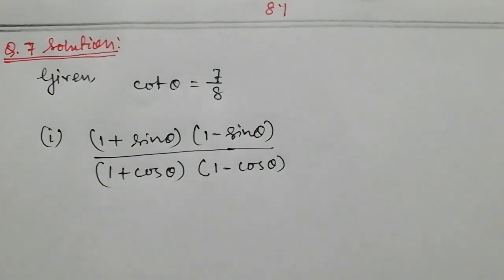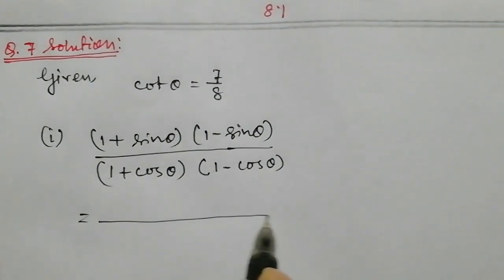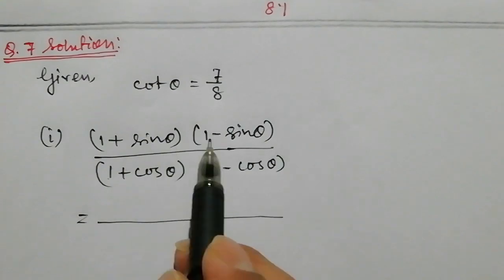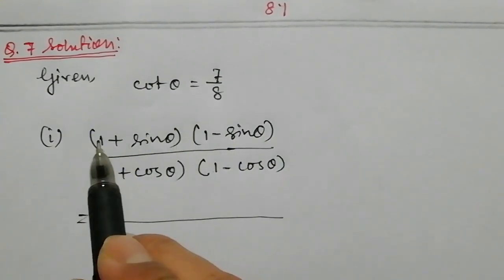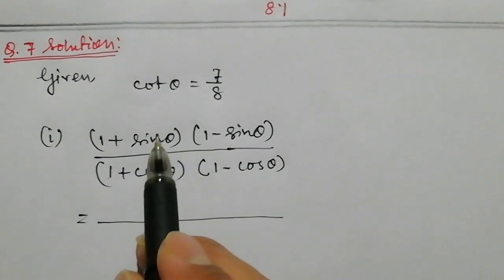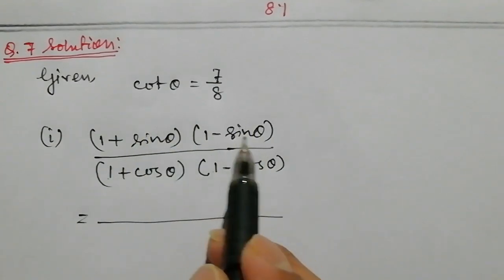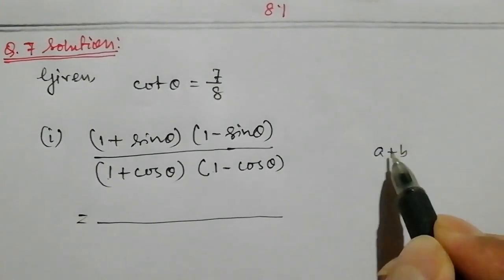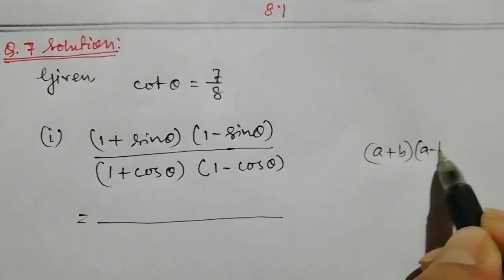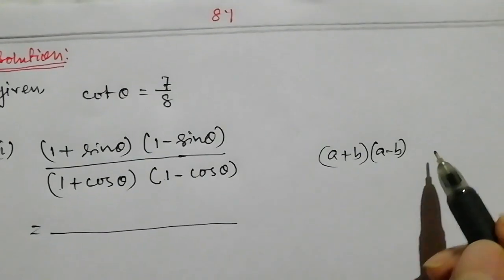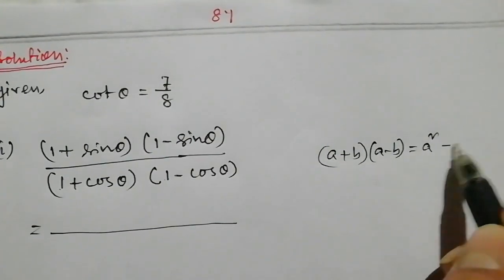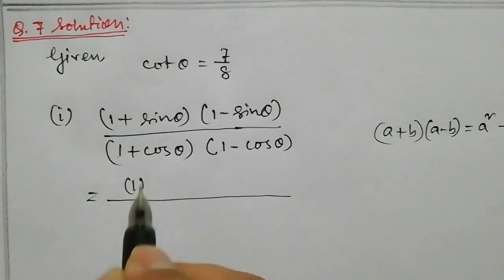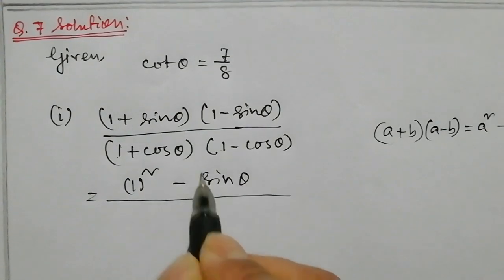Interestingly, as can be found on the next slide, we apply the identity a plus b into a minus b equals a square minus b square. So the numerator becomes 1 square minus sin theta square.